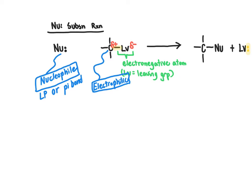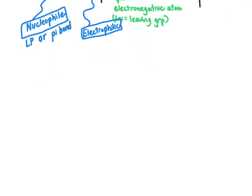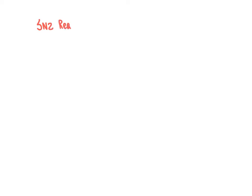This is a general overview of the reaction. There are two different mechanisms we can use to illustrate how we go from our nucleophile and electrophile to our final reaction products. We're going to focus on the SN2 reaction mechanism. The mechanism is our explanation of how the electrons move in going from the starting material to the product, and we come up with the mechanism based on observations we can make experimentally about the reaction.